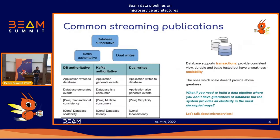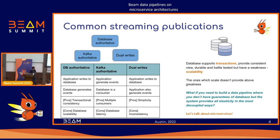Let's talk about some of the common stream publication patterns. There are three main patterns: the database authoritative, the Kafka authoritative, and the dual write. Each has its own pros and cons but they're centered around the database, which provides consistency and durability. The database supports transactions and is well battle-tested. But where databases lack is scalability — databases that scale don't provide all these guarantees. So what if you have to create a data pipeline where you don't have the guarantees of a database, but the system provides all the elasticity in the most decoupled way?